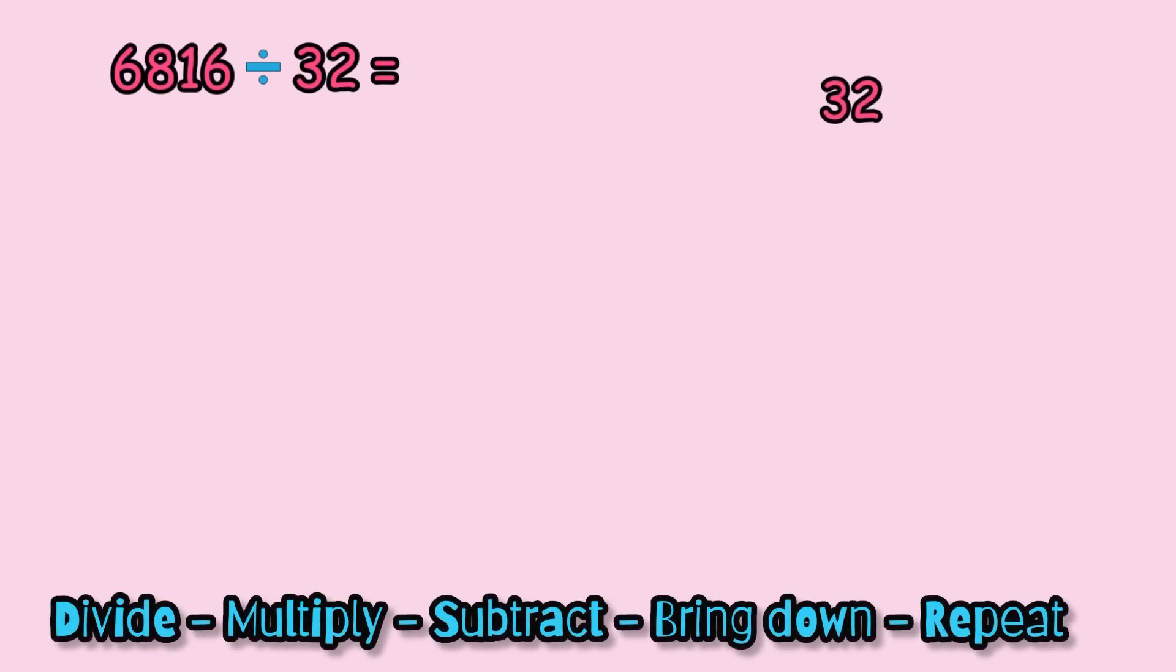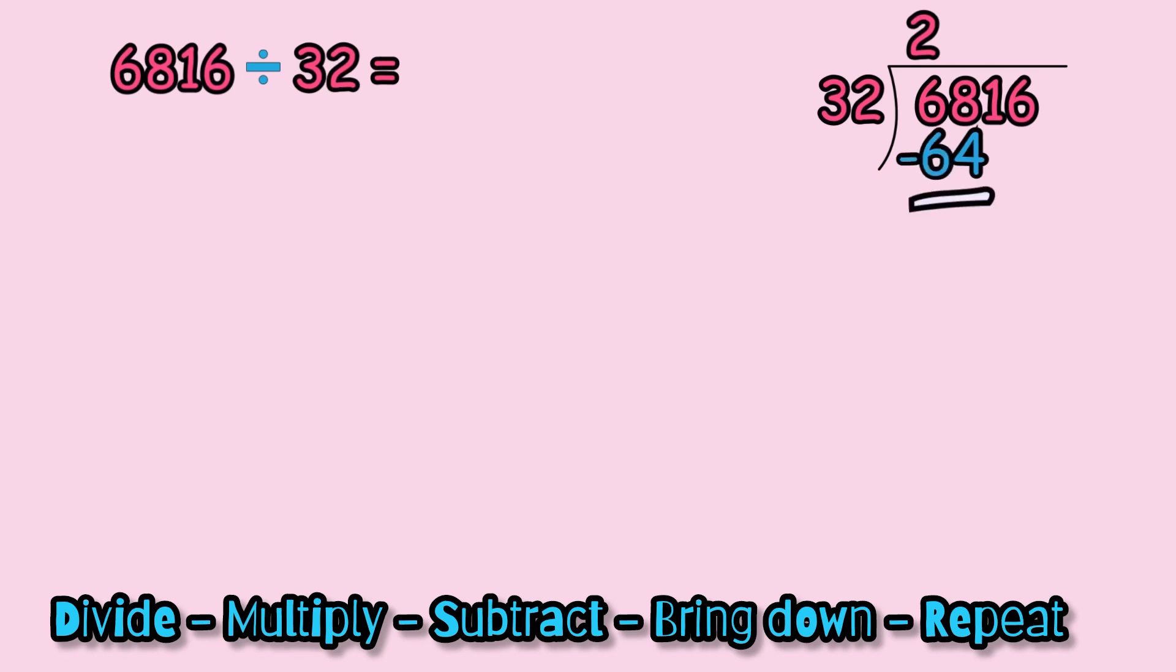Here we have another example. In this example we're going to be working faster because we already know what division is. So let's begin. How many times can we put 32 into 68? 32 times 1 is 32, I'm almost sure it will be 2. Let's see. Now let's multiply: 2 times 2 equals 4, 2 times 3 equals 6. Yes, very good, it's 64, so our number is 2. Next we have to subtract: 8 minus 4 equals 4, 6 minus 0 equals 0.